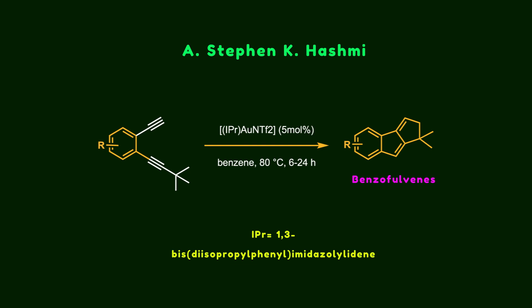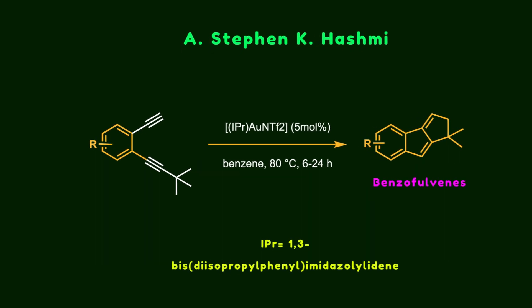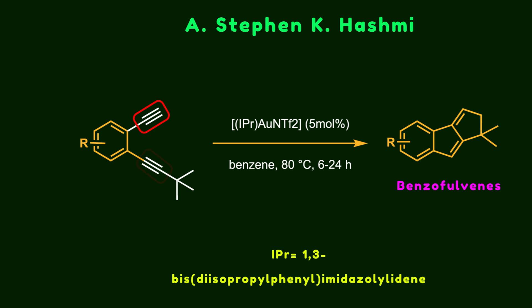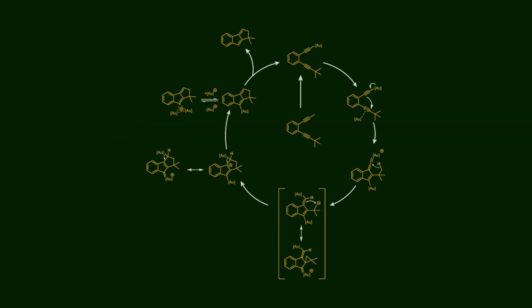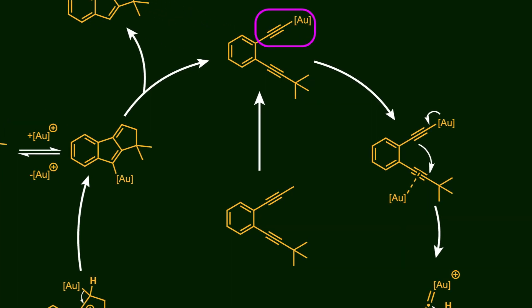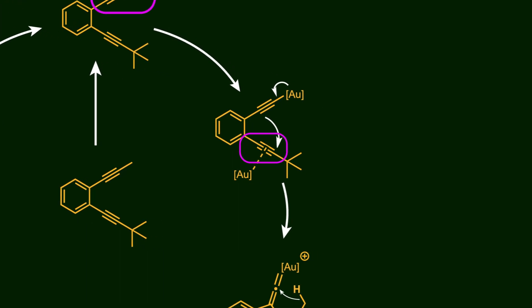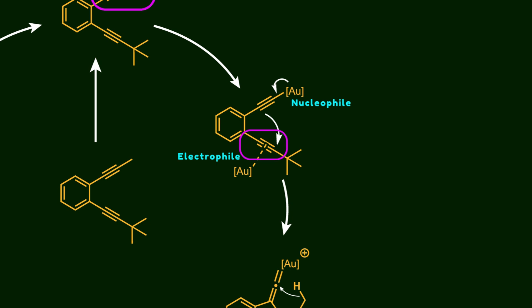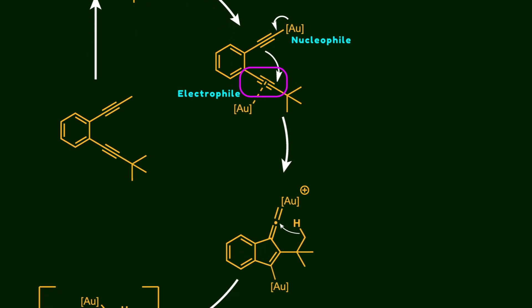This approach enables the synthesis of benzofuovuline derivatives from simple starting materials containing two alkyne functional groups — one terminal and the other internal, with the latter attached to a tert-butyl group. In the first step, gold activates the terminal alkyne via sigma-coordination. Subsequently, the second alkyne is also activated through pi-coordination. At this stage, the terminal alkyne becomes nucleophilic while the internal alkyne acts as an electrophile. As a result, the pi-bond of the terminal alkyne attacks the internal alkyne, leading to the formation of a 5-membered ring.